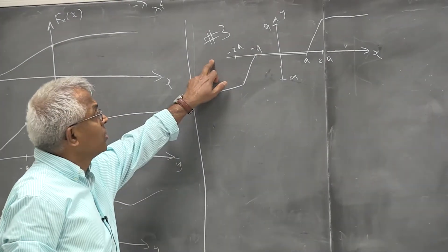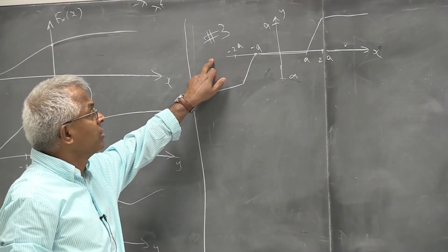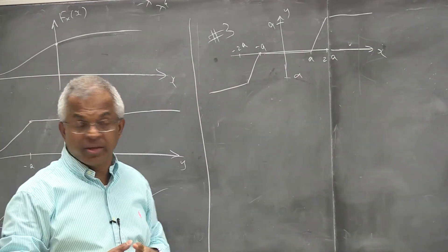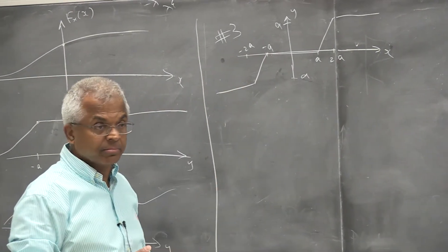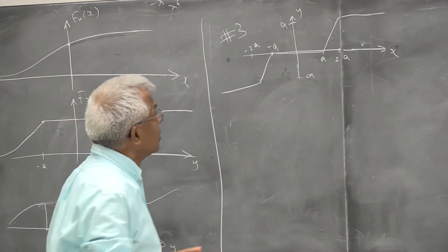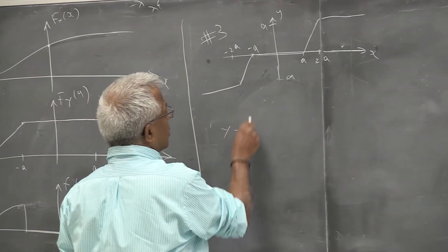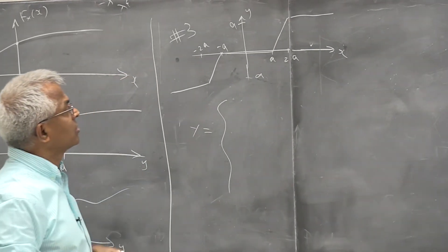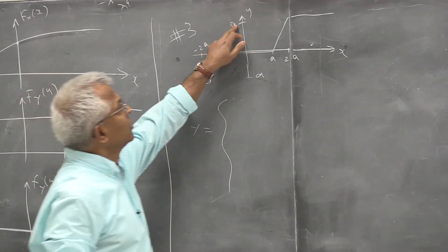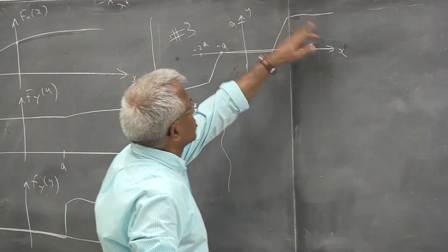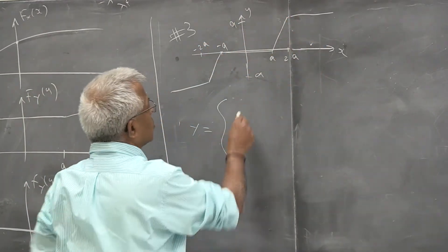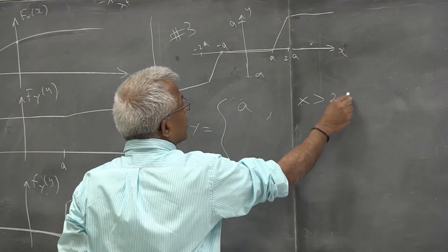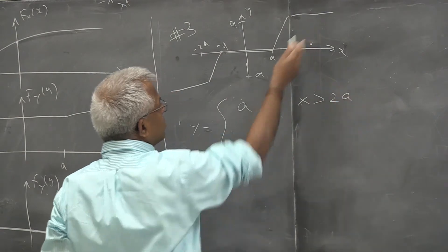Let's look at this third problem quickly. I just redrew the graph here. So let's write down the relation between y and x. Notice that y is a constant beyond x equals 2a, so y is a for x greater than 2a from the diagram.